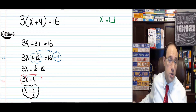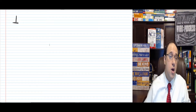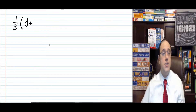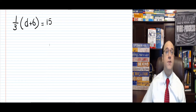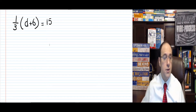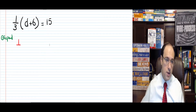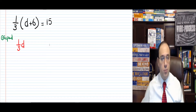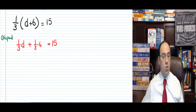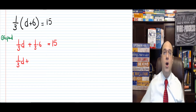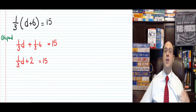Now let's do one more that looks similar, but let's use fractions this time. Here's the question: 1/3 times d plus 6 equals 15. If you have parentheses on the left, if you have factors on the left, you must first expand. So number one: expand. 1 over 3 times d plus 6 gives us 1 over 3 times d, which is 1/3 d, plus 1 over 3 times 6, which equals 6 over 3, which is 2, equals 15. Now it's looking like a normal equation.